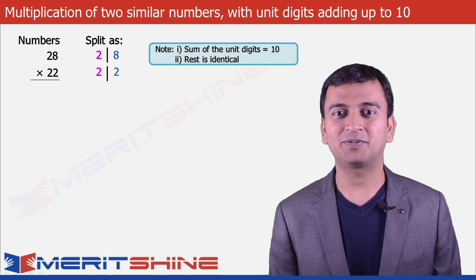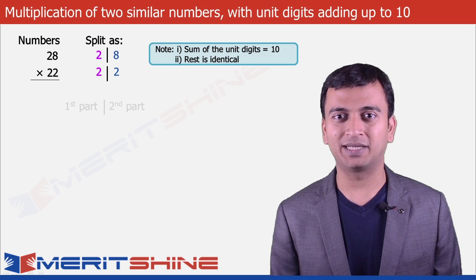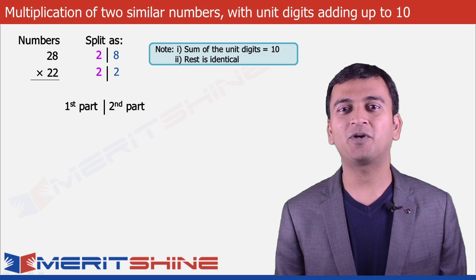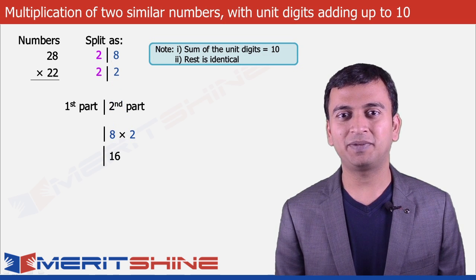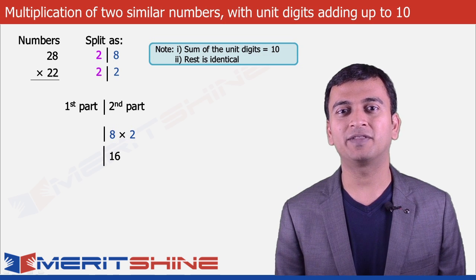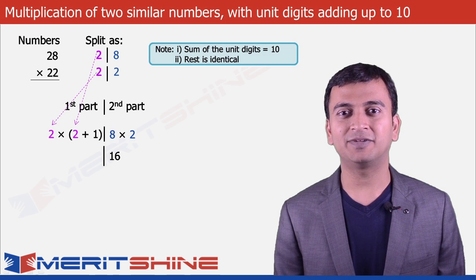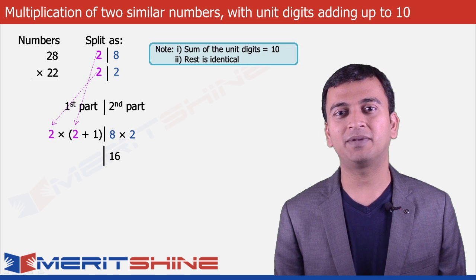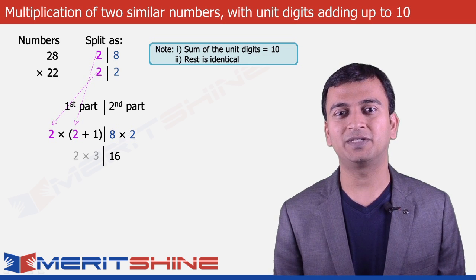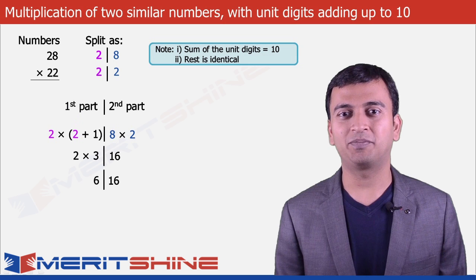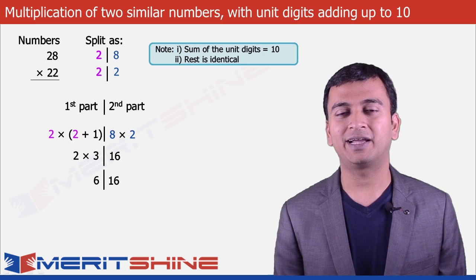Now let us proceed to write down our answer which would be in two parts. The second part would be the product of the unit digits, which in our case is 8 × 2 = 16. For the first part we will take the identical part and multiply it by 1 more than itself, which in our case was 2. So we multiply 2 by 3, giving us 6. Now we can put these two parts together and write down our final answer as 616.